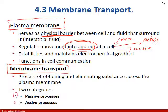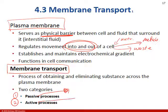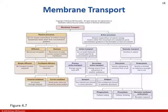There are two big categories of membrane transport: passive and active. If someone behaves passively, not a lot of energy involved. If someone is active, they're jumping all over the place. Active transport requires energy; passive transport does not. Here's a flow diagram for membrane transport.